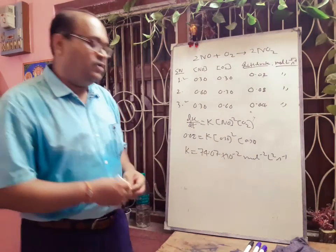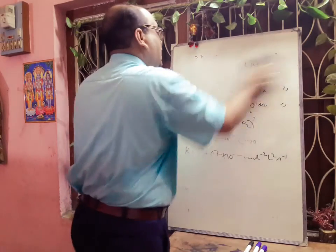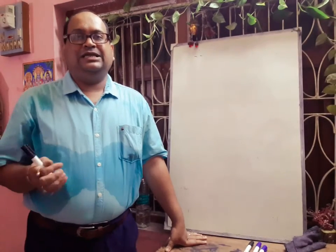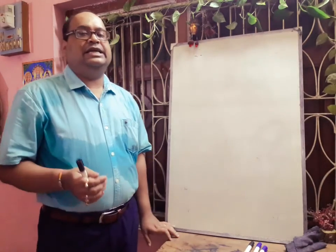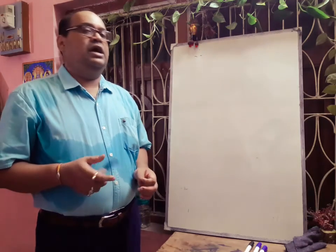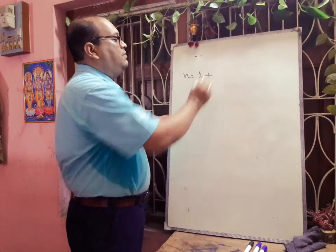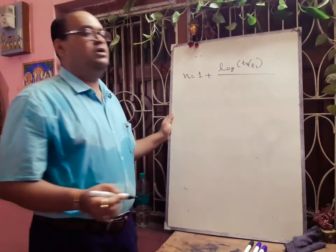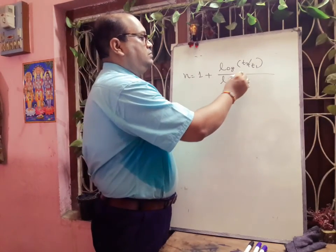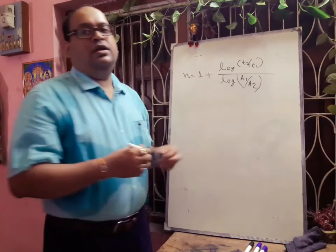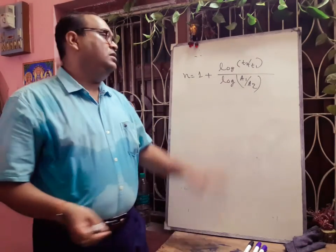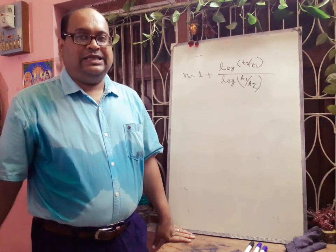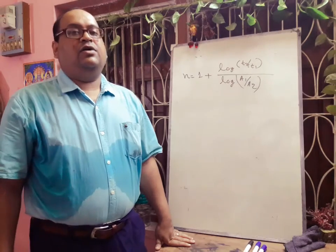The last method for determining order is the half-life method. The equation used is: n equals 1 plus log(T2/T1) divided by log(A1/A2), where T1 is the half-life for initial concentration A1 and T2 is the half-life for initial concentration A2. By this method we can calculate the order of a particular reaction.